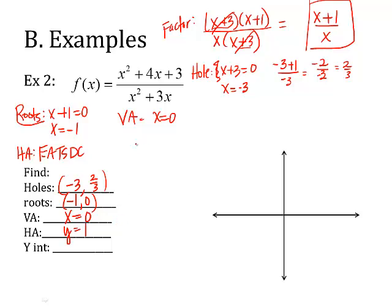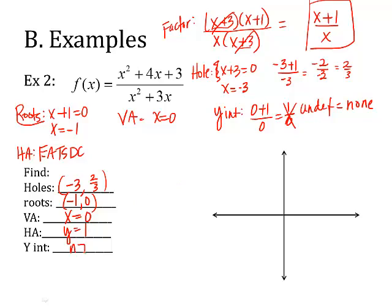And lastly, the y-intercept. I take the reduced equation and put in 0 everywhere there's an x. So 0 plus 1 over 0. Well, 1 over 0 is undefined, which means there is none — there is not a y-intercept at all. It's not going to cross it.